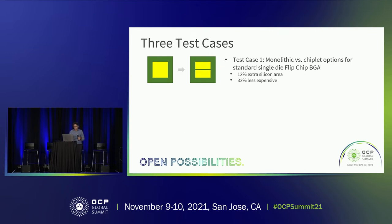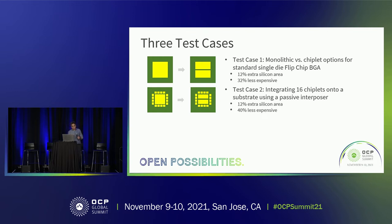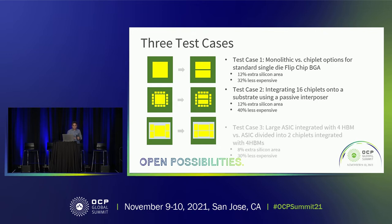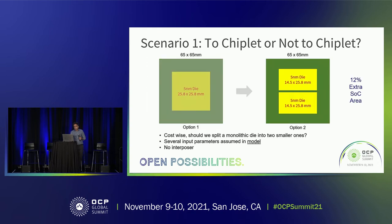We also did a test case with 16 chiplets and one big die, splitting the main die into two — again finding an advantage with chiplets. A third scenario involved four HBMs mounted on a silicon interposer with a main die, where splitting the die yields some cost savings. For the first scenario specifically, we assumed a 65mm package at a 5nm process node, splitting the die into two pieces.